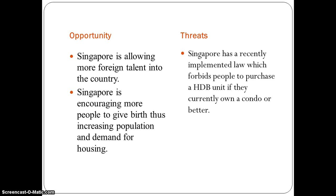Now we move on to the threats. One of the major threats is that Singapore has recently implemented a law which forbids people to purchase a HDB unit if they currently own a condo or better. This is very detrimental to Maple Tree, as they commonly build condos, and if people think twice about buying a condo because they do not want to lose the privilege to purchase a HDB, that would impact sales.